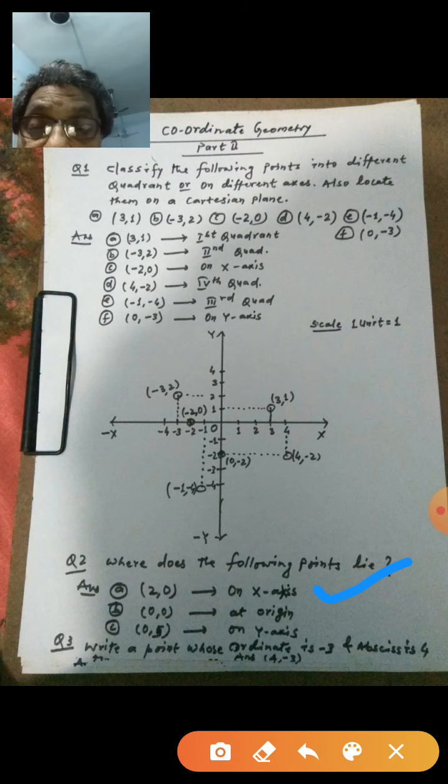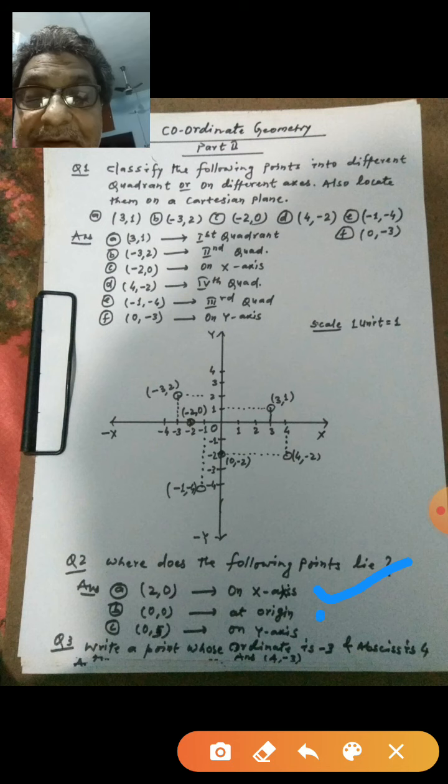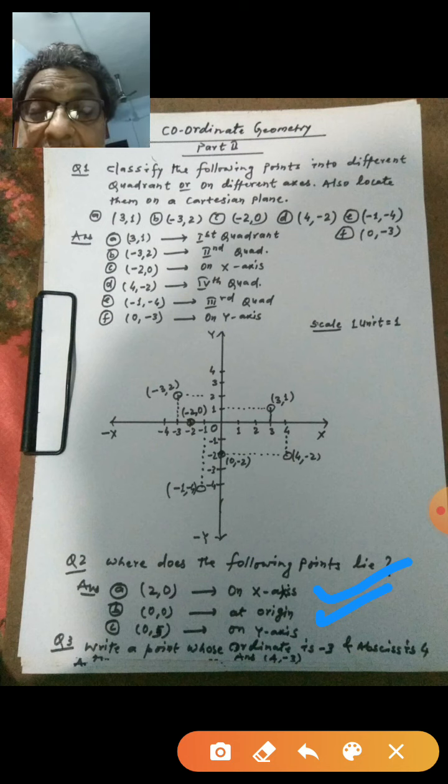Now the second point is 0 comma 0, both are 0. So recall, you can easily answer that this point is at origin. And the next one is 0 comma 5, since x coordinate is 0, so point goes to y-axis. Very good.